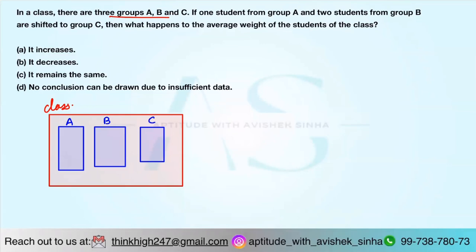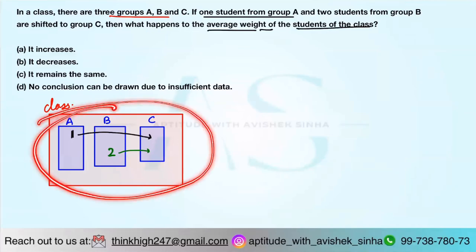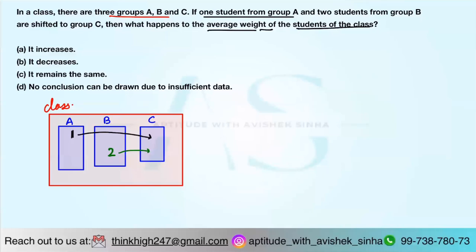Now what happens? One student from group A and two students from group B are shifted to C. What happens to the average weight of the students of the class? Does it increase, does it decrease, does it remain the same, or no conclusion can be drawn?